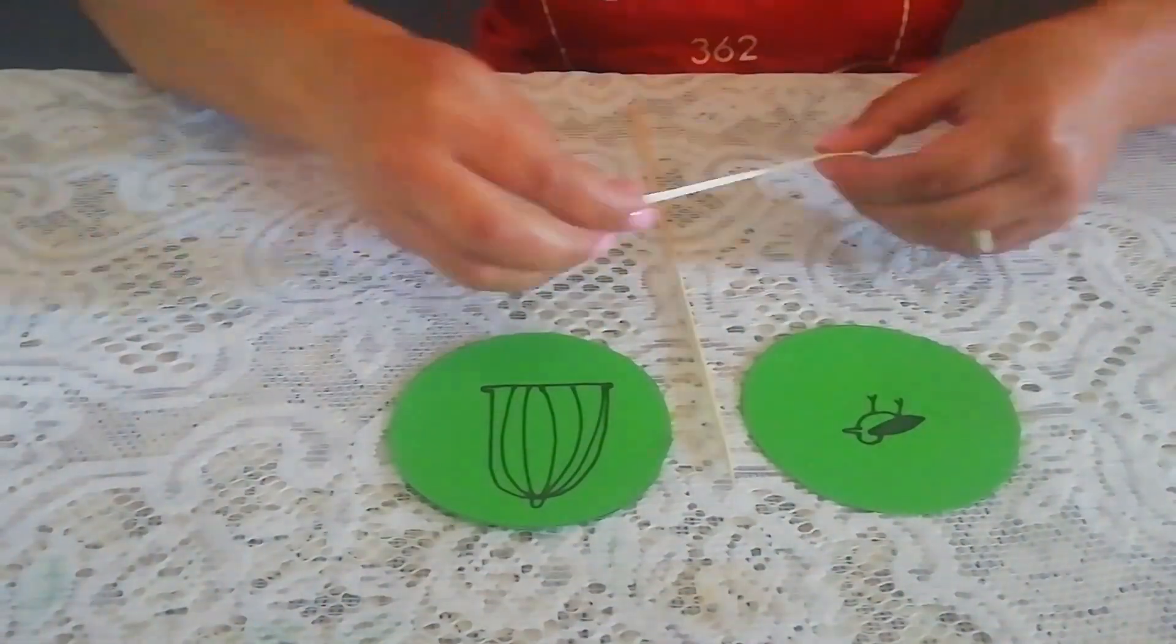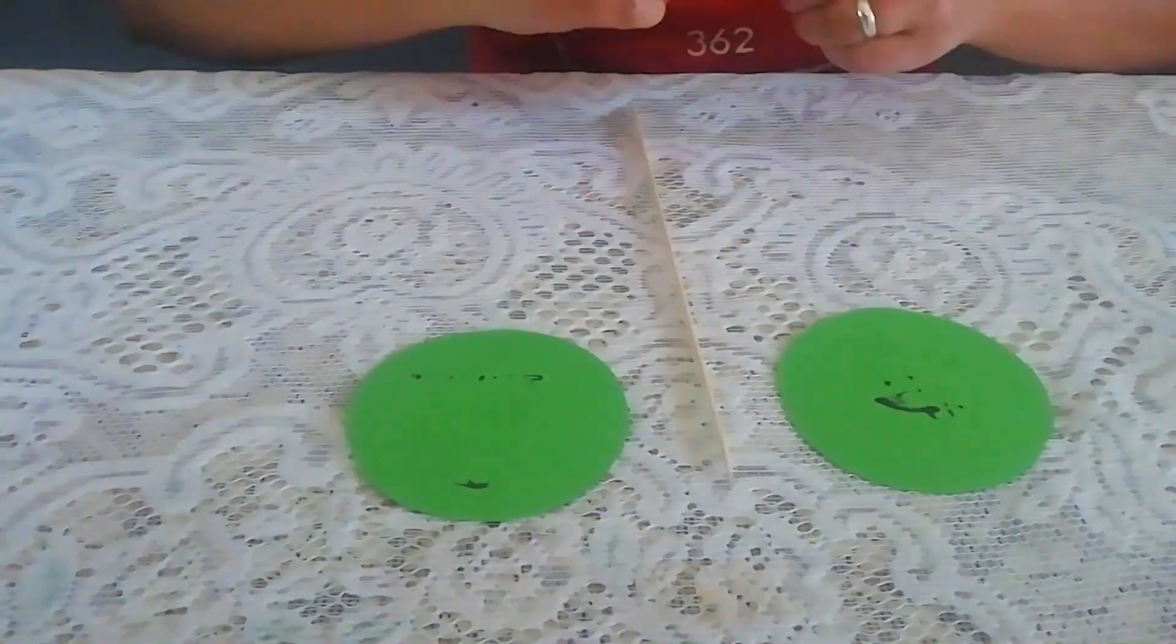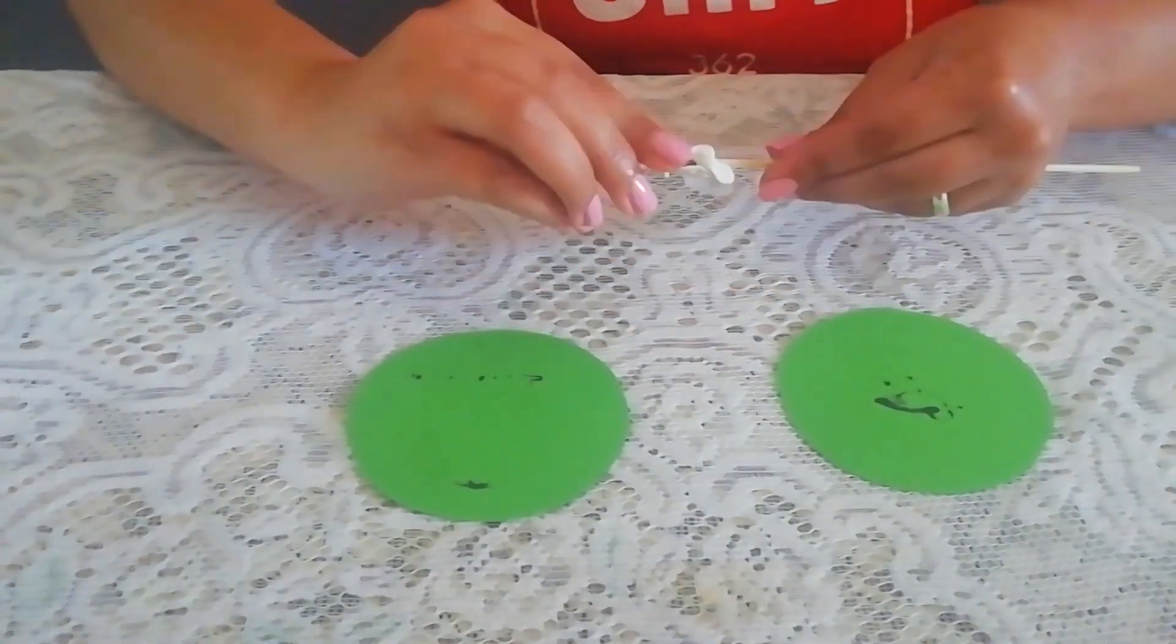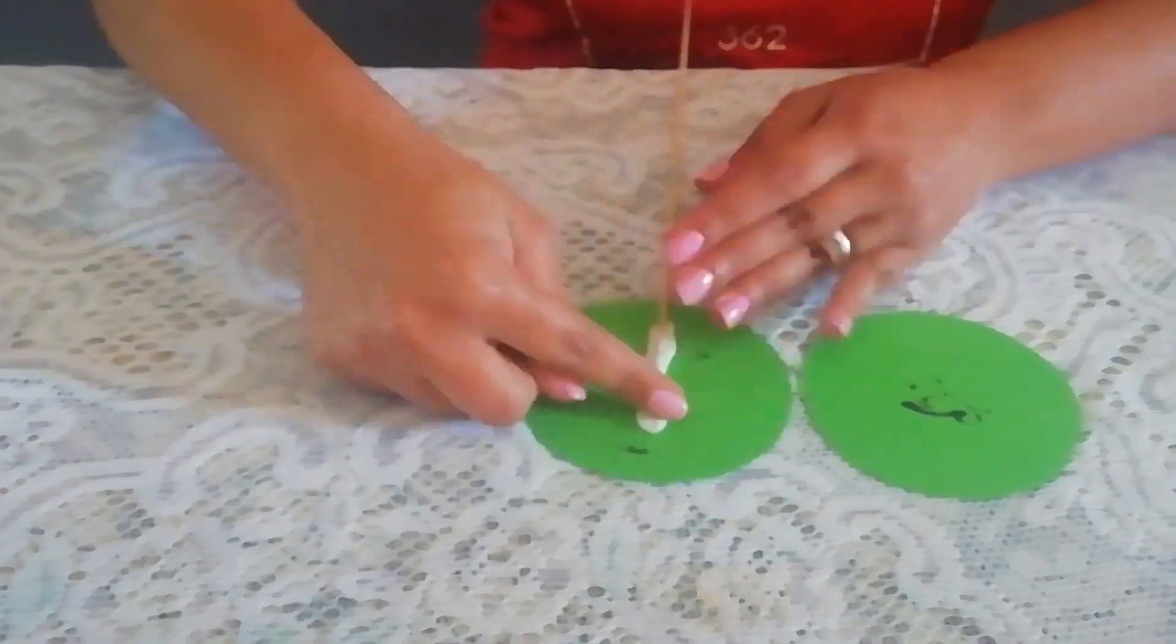With any form of adhesive, stick the skewer stick to the back of one of the circles. We will be using press stick to attach our skewer stick.